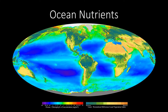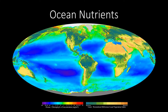This is an introduction to nutrients, which are a really important part of chemical oceanography. These are one of the things that really determine where in the ocean we get life and where we don't get life. They're an important thing to understand in terms of what determines the distribution of elements throughout the oceans.